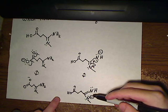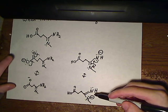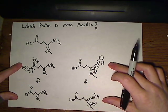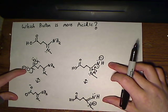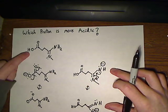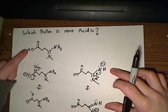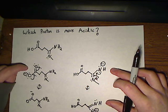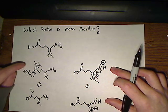So they both have two contributing resonance structures, but because oxygen is more electronegative, we know that the O-H proton is going to be the more acidic proton because it has a more stable conjugate base.